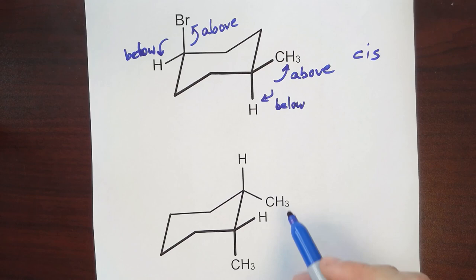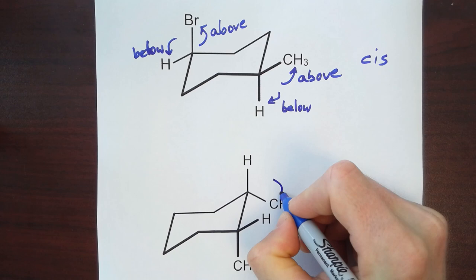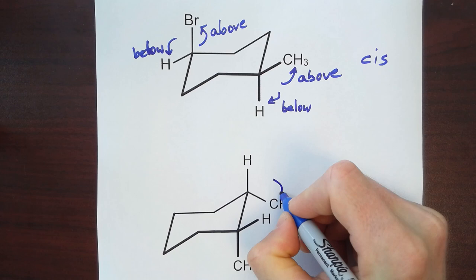This last example shows two methyl groups attached to the cyclohexane ring, where this methyl group is below the ring and this methyl group is also below the ring. So this is also a cis stereoisomer.